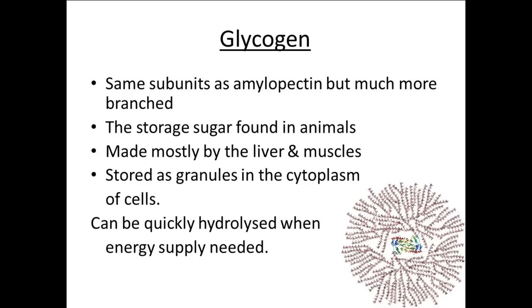The reason why organisms store things like glycogen and starch is the fact that they are insoluble, whereas monosaccharides are soluble in liquids. Glycogen and starch are not soluble, which makes them very useful because they do not affect osmotic balance, and therefore do not affect water potential, so water does not move in or out of cells due to high levels of glycogen or starch.